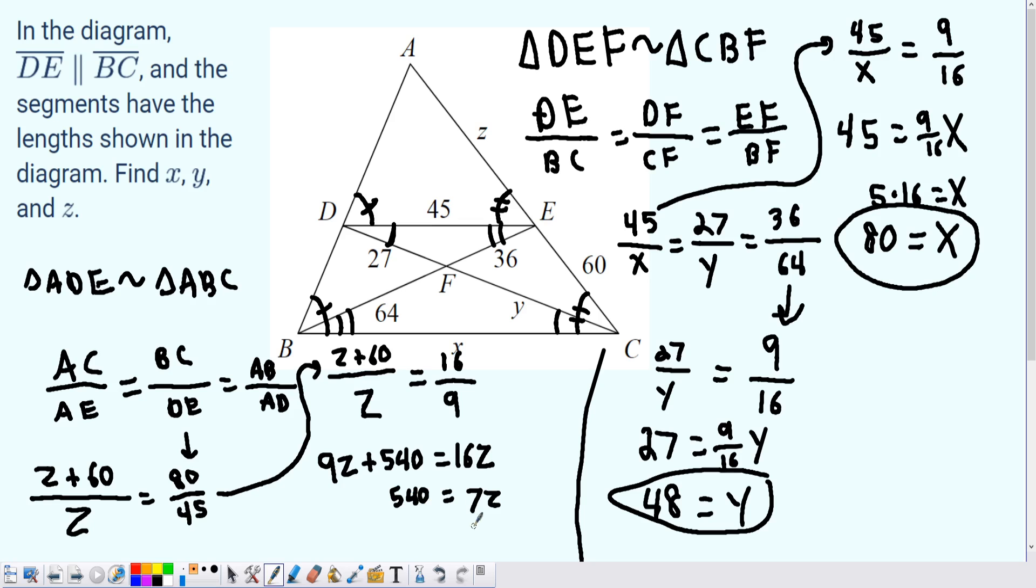And then finally our answer becomes z equals, and it's not going to reduce nicely or at all really, so I'm just going to put 540 over 7.